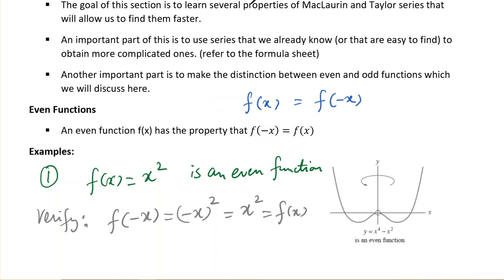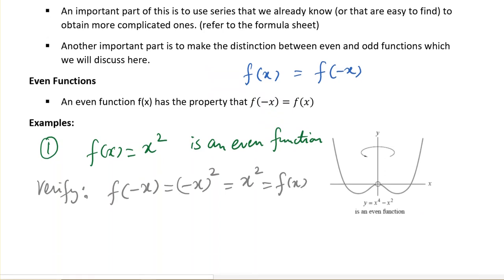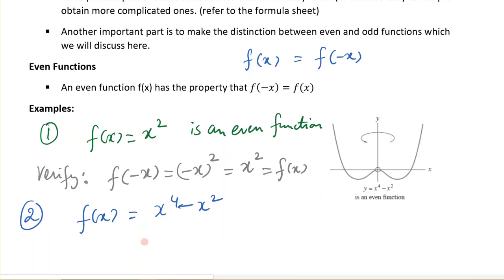There is a geometrical property of even functions: geometrically, the function is symmetrical about the y-axis. Here is a graph of another function, f(x) = x⁴ - x². This would also be an even function because you can change x to negative x and see that you get the same result as f(x). So this function is symmetric about the y-axis.